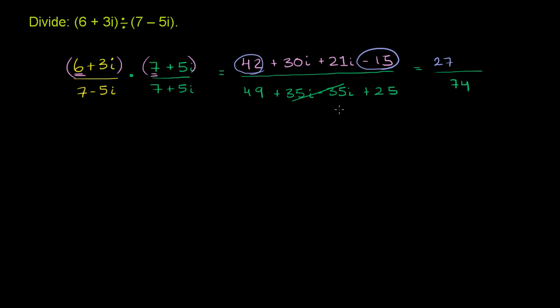And then we're going to add our 30i plus the 21i. So 30 of something plus 21 of that same something is going to be 51 of that something. In this case, that something is the imaginary unit, it is i. So this is plus 51i.